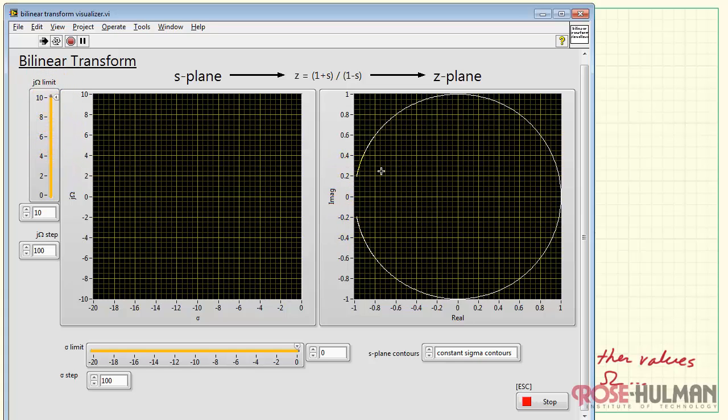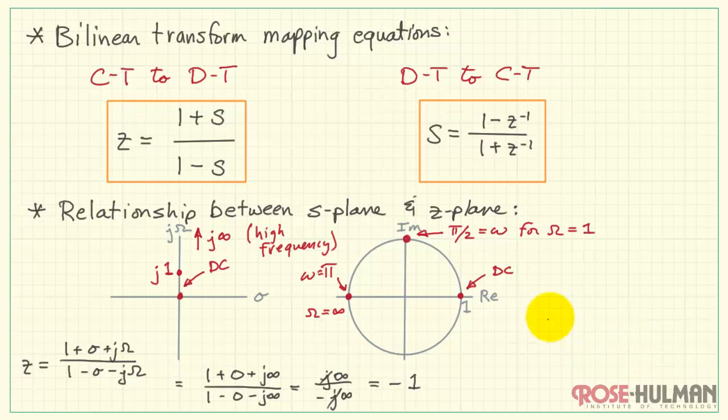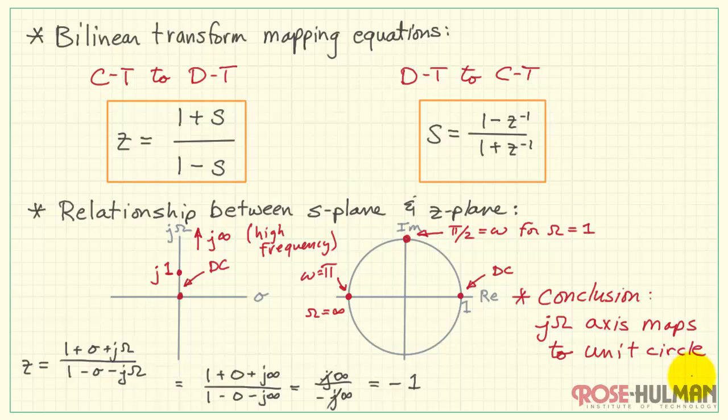Now you'll notice this is the extent when we sweep from 0 to 1 and on up through 10. Note that we pretty rapidly get around the circle just between 0 and 1, but we seem to be taking some time to actually get to negative 1. We get a lot closer if I change the upper limit to 100, but we have to get to infinite value before it actually hits negative 1. So our main conclusion is that the j omega axis maps directly onto the unit circle.